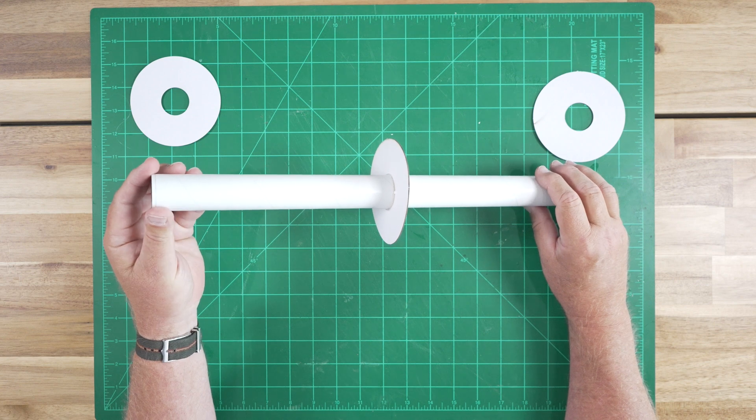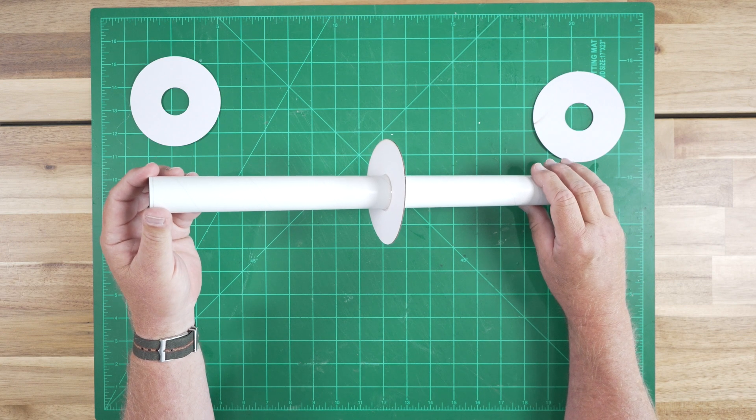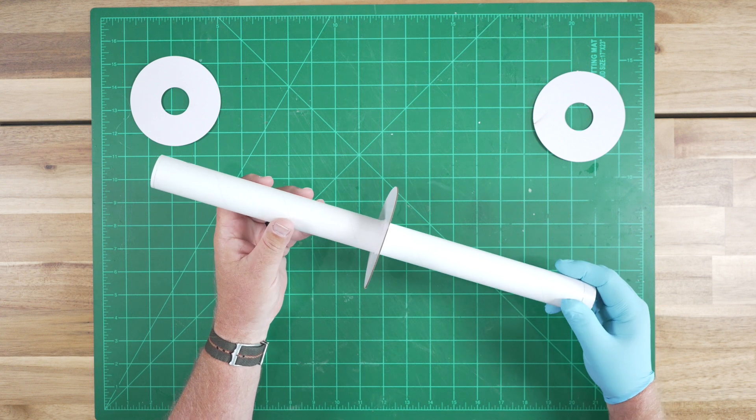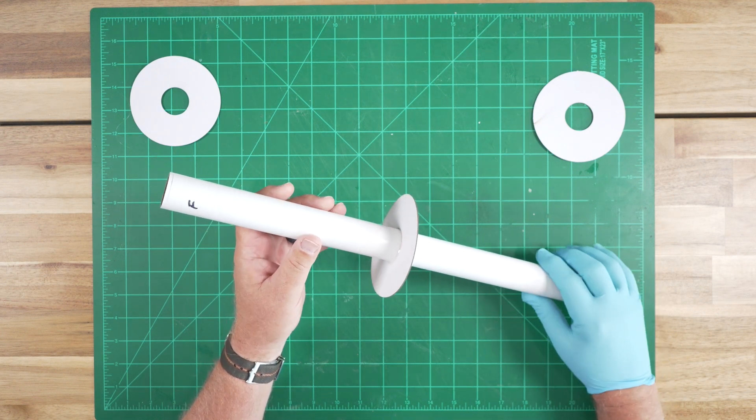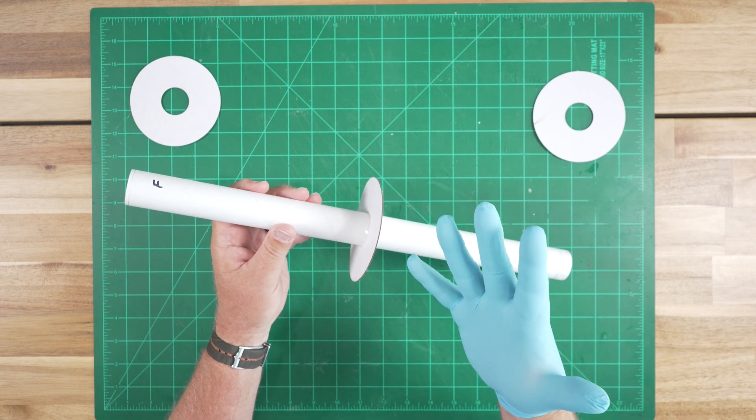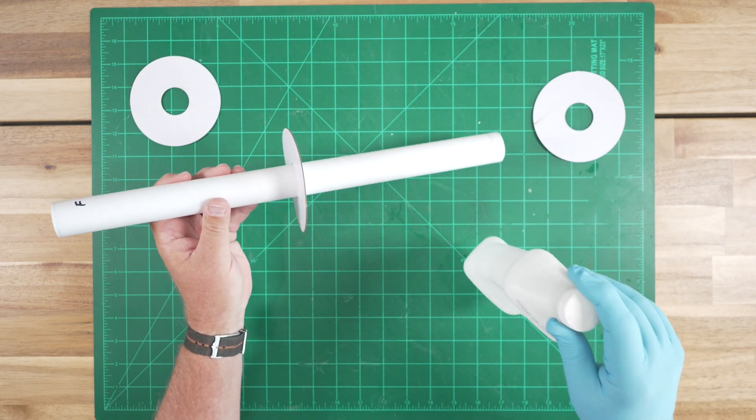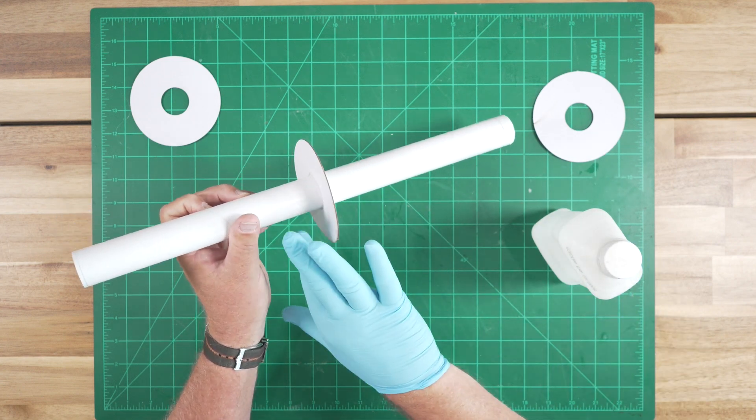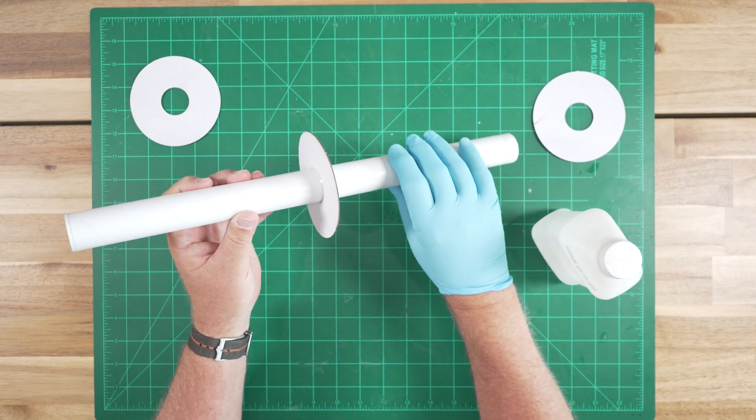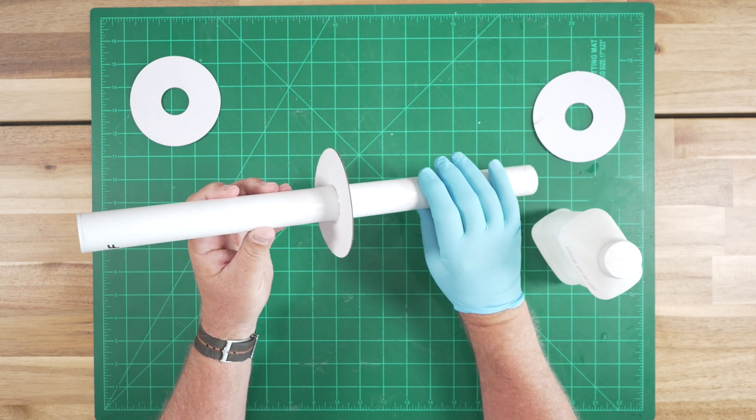And we'll let that cure for about 5 minutes before we place the other rings. There's one more thing we can do. Since we want that to be a cosmetically clean joint, I've put a glove on and I'm going to dip my finger in some common rubbing alcohol and then smooth that epoxy out to ensure a nice, clean, strong joint.